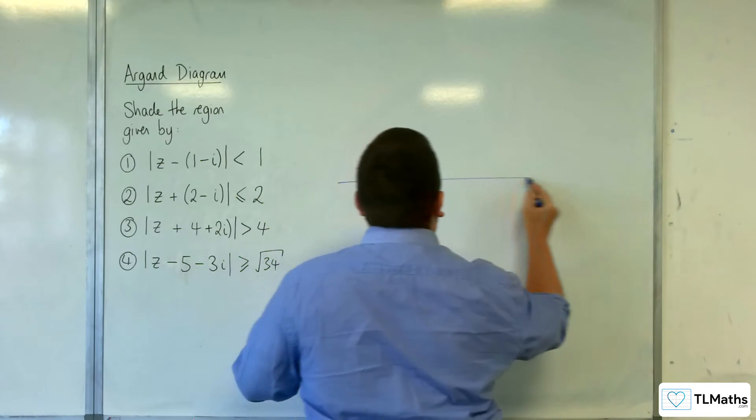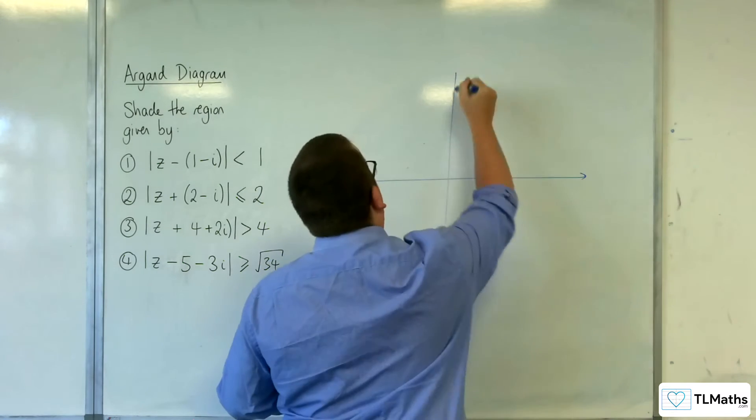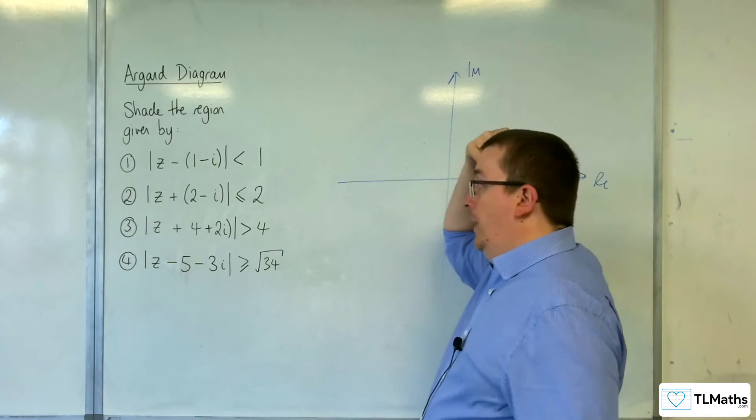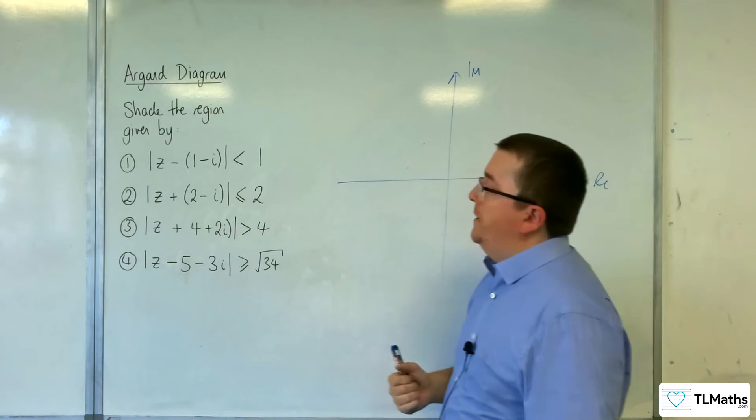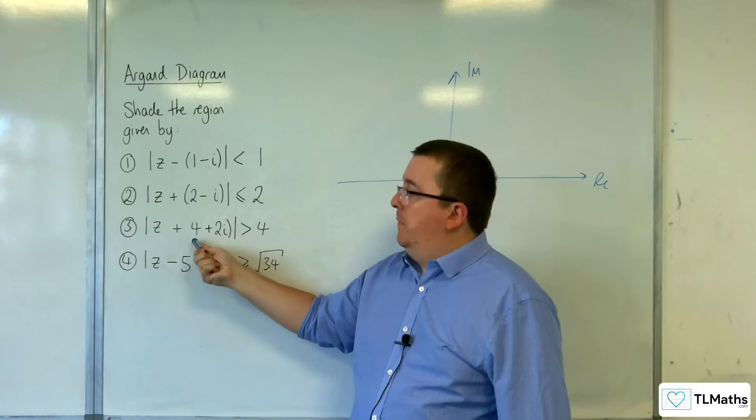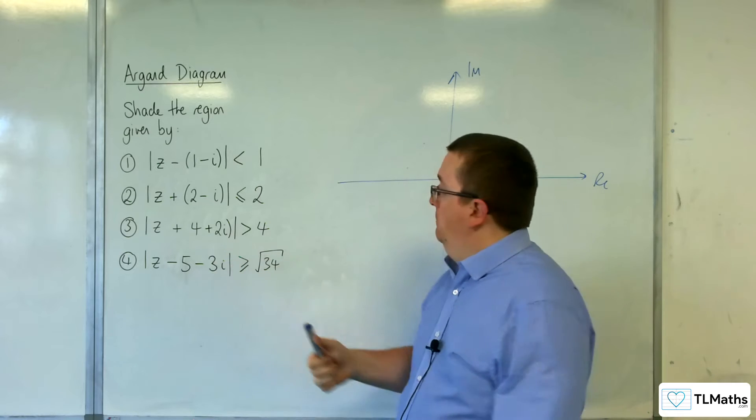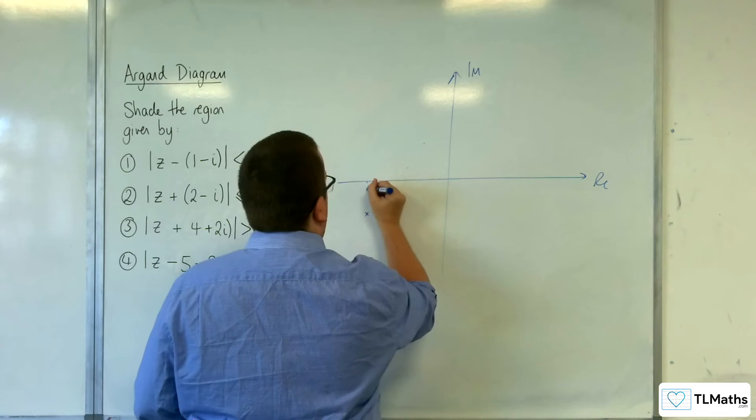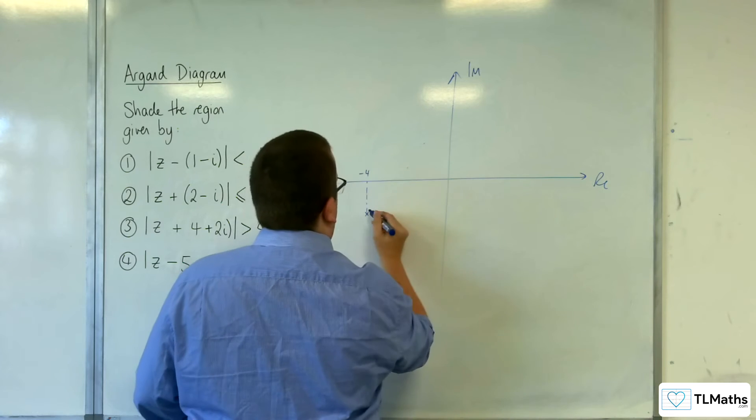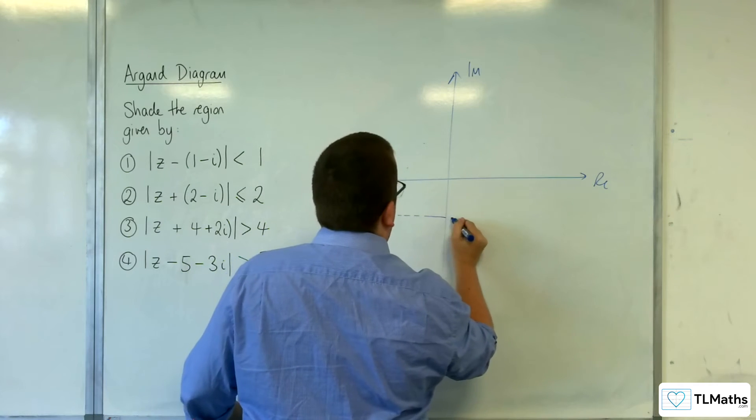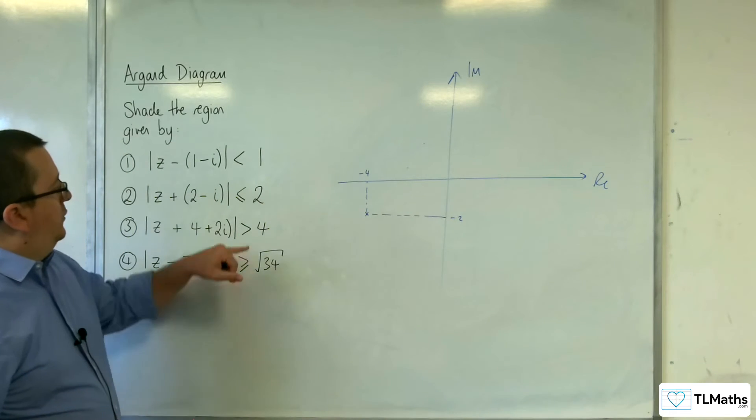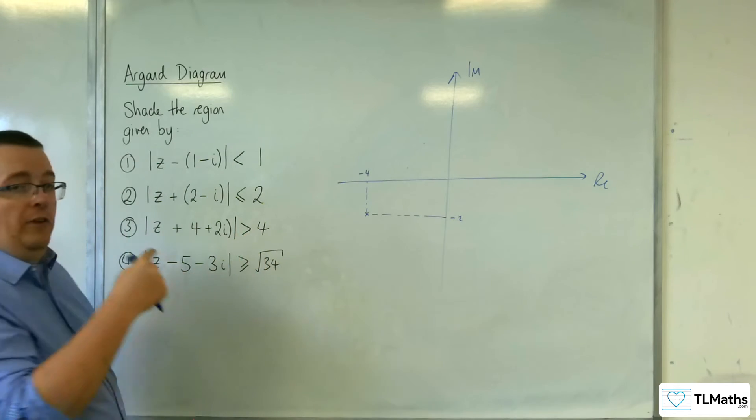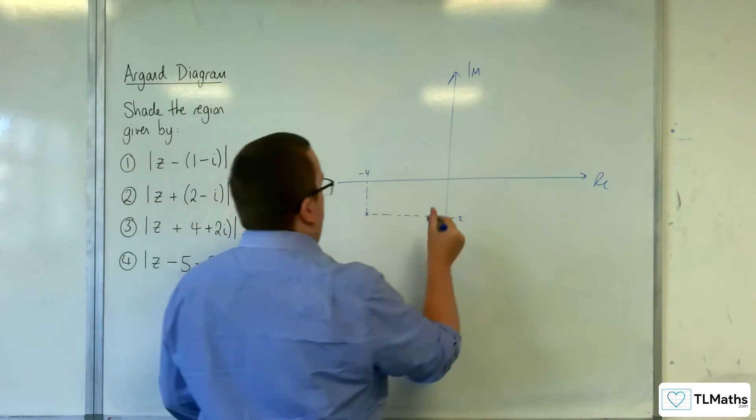Right, number 3. We've got z plus 4 plus 2i. So that means it's going to be centred at minus 4 minus 2i. So minus 4 minus 2i. So something like this, that's minus 4. That's minus 2. It's got a radius of 4. And because it's greater than, we're using a dotted line. Dotted curve.